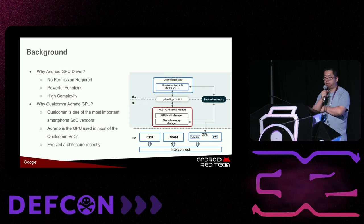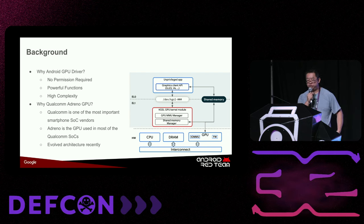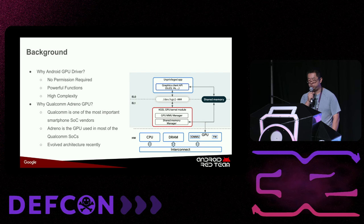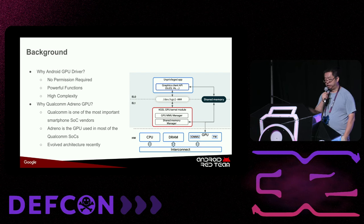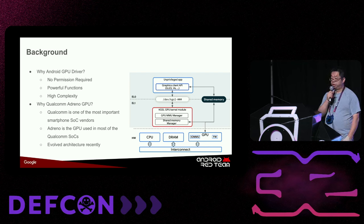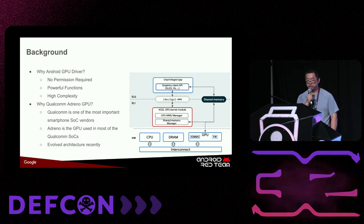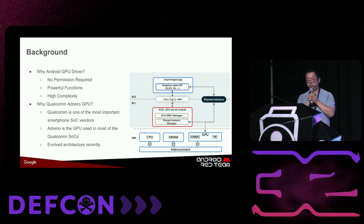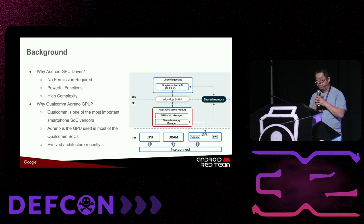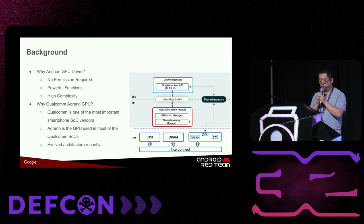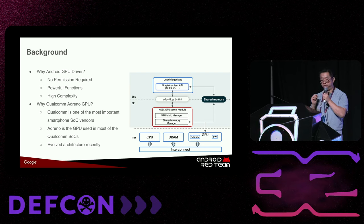So why Qualcomm? Qualcomm is one of the most important smartphone SoC vendors, and many devices use Qualcomm SoCs. On those SoCs, Adreno GPU is the one used most. And this applies to all GPUs: GPU is a very actively developing area. Because of all the requirements — gaming keeps demanding higher resolutions, faster speed, faster FPS — there's lots of development involving revolutions in architecture, hardware, and software. We noticed there is a new architecture recently in the Qualcomm GPU. New architecture, new software means new bugs. We want to take a look and see what's different and if there are any issues there.